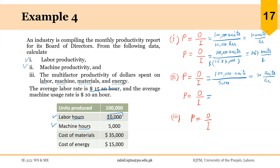Similarly, productivity for machines can be calculated in terms of output per dollar spent on machine time. That will be 100,000 units divided by the machine input in dollars. The average rate of machine usage is $10, so that is $10 multiplied by 5,000 hours, which equals $50,000. So the productivity will be 100,000 divided by 50,000, giving 2 units per dollar spent on machine usage.